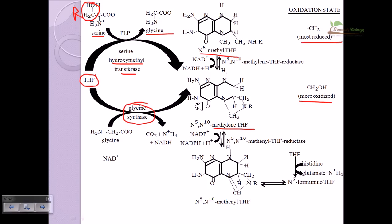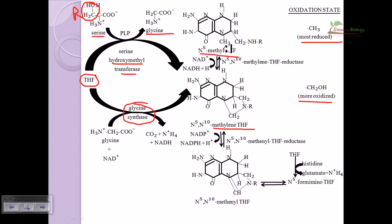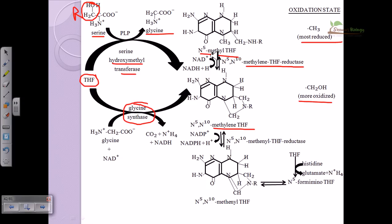So in the first step we produce N5-methyl-tetrahydrofolate (the most reduced form), and in the second step we produce N5,N10-methylene-tetrahydrofolate (a more oxidized form). These two forms can be interconverted via methylene-tetrahydrofolate reductase, illustrating the circular interconversions between different THF states.